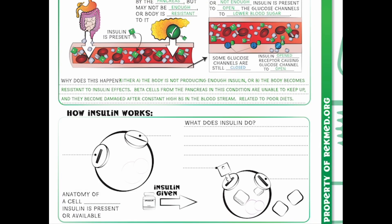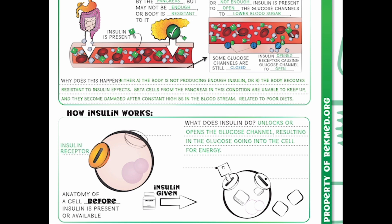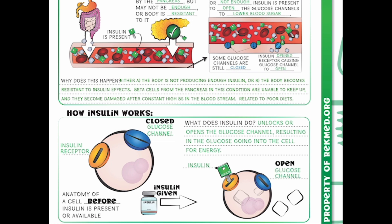How exactly does insulin work? Insulin unlocks or opens our glucose channels, resulting in glucose going into the cell for energy. Looking at the anatomy of a cell before insulin is present — this pink circle is our cell, and we have our insulin receptor sitting on top, with the glucose channel above it. It's closed because there's no insulin unlocking it. When we give insulin, it binds to the insulin receptor, which unlocks or opens the glucose channel, and now our blood sugar is able to get into the cell. There are many different types of insulins we can give patients — some work quickly, some work over the long term — and we'll go over that in a future lesson.